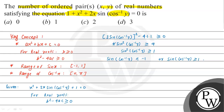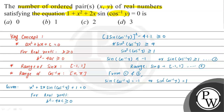Now, considering the range of the sine function, sin(θ) lies in [−1, 1]. Combining this with our condition, we conclude that sin(cos⁻¹y) must equal either −1 or 1. So either sin(cos⁻¹y) = −1, which gives cos⁻¹y = sin⁻¹(−1), or sin(cos⁻¹y) = 1, which gives cos⁻¹y = sin⁻¹(1).